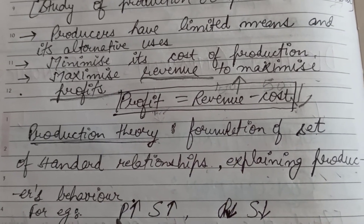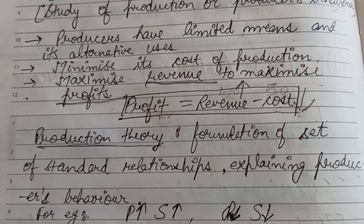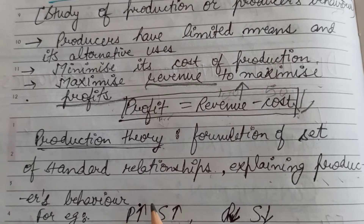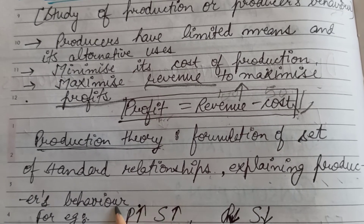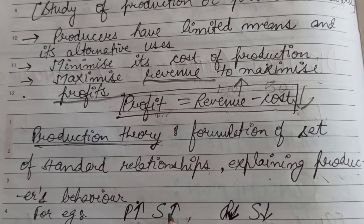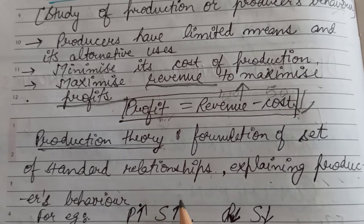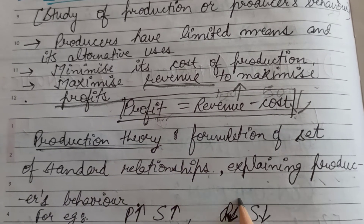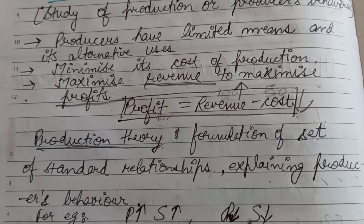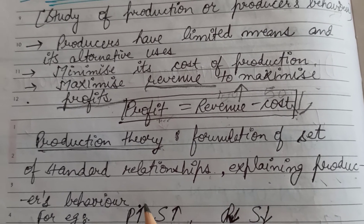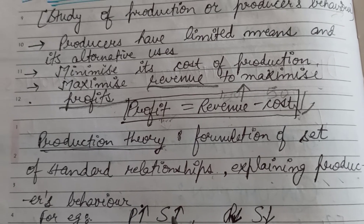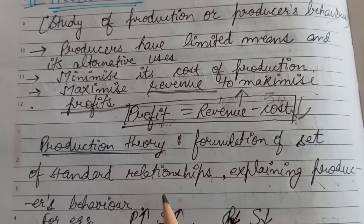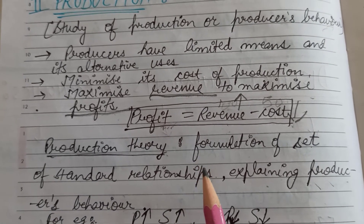On the basis of that, principles will be set up. For example, a producer will definitely increase his supply if the price of a certain commodity increases. Therefore, a standard relationship is established: when prices increase, supply by producers also increases because their motive is to maximize profit. Similarly, if prices decrease, supply will decrease. So there is a positive relationship between the price of a commodity and the supply of a commodity from the viewpoint of producers. This was all about the second component, that is production.